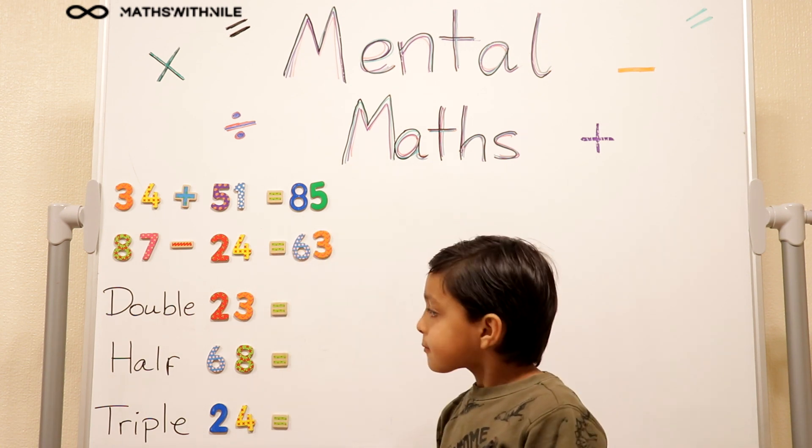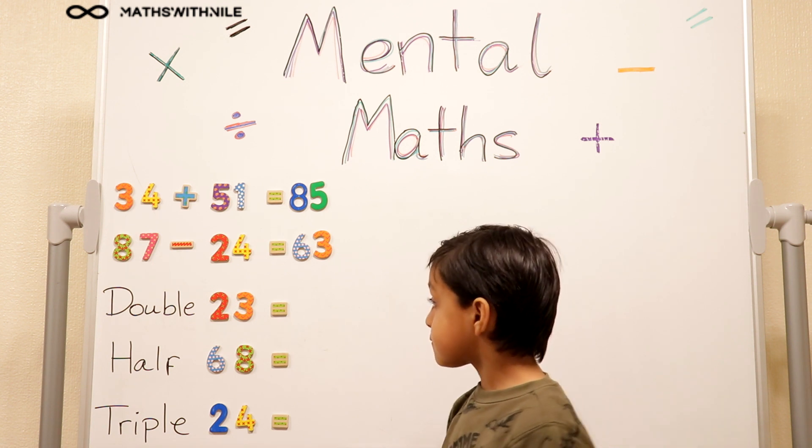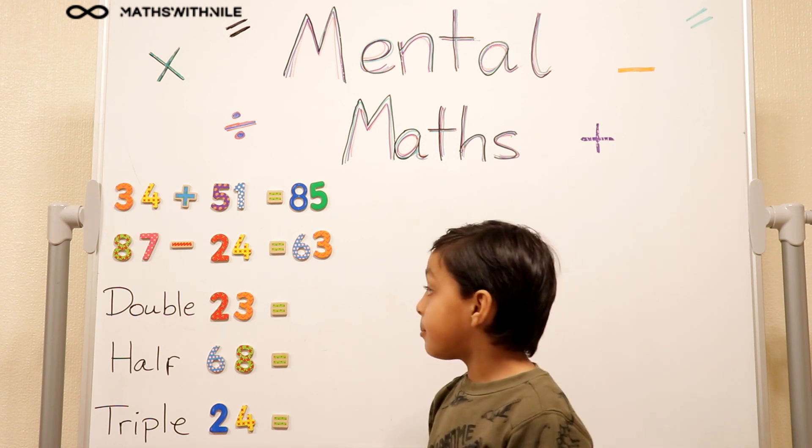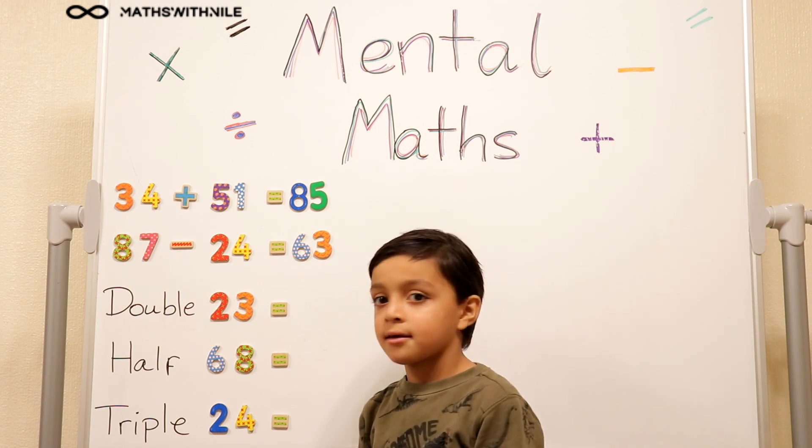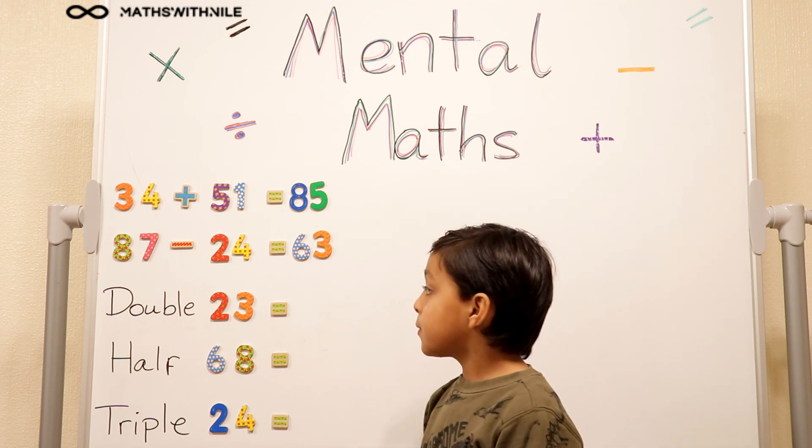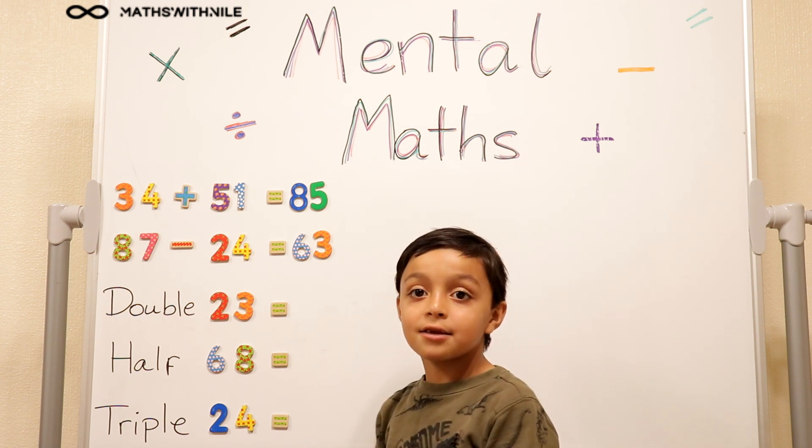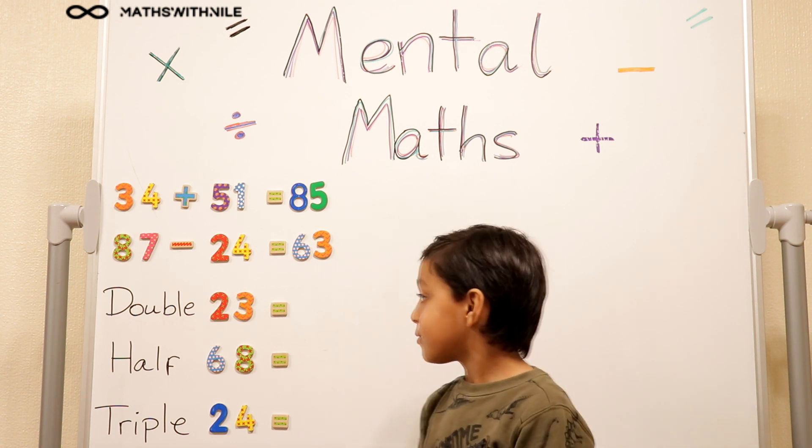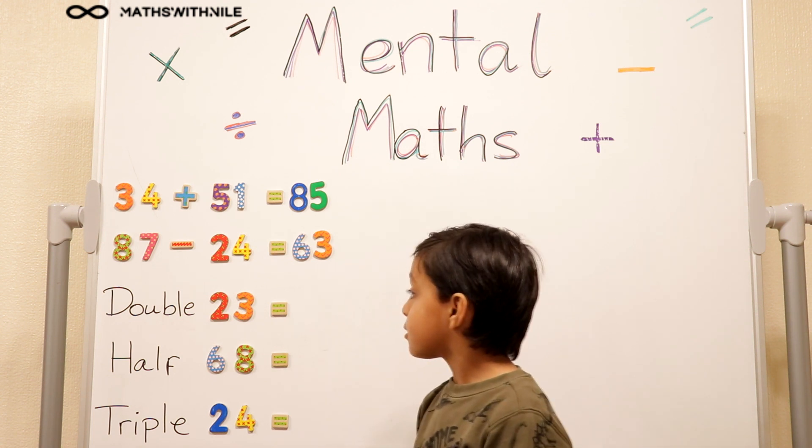What about the third question? What does it say? Double 23. So how are you going to work that one out? First I'm going to double the 20 and then I'm going to double the 3. Okay, good. So you split them up and then you double each.